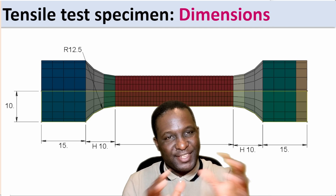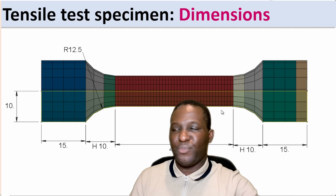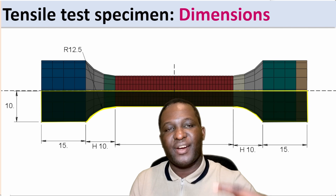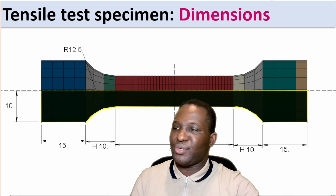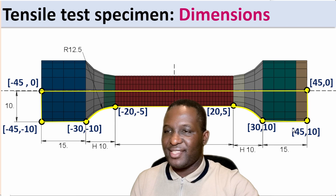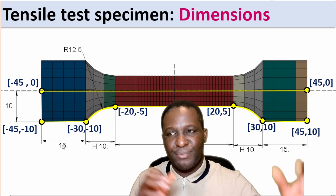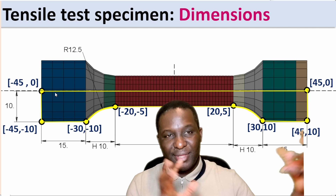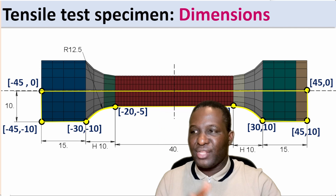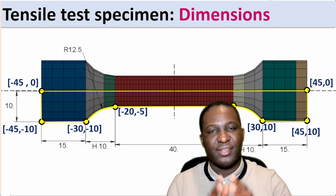Looking more closely at the specific dimensions, because we need these as we create the sample. This is what the cross section of the sample would look like. I'm going to design the cross-section profile and then revolve it around 360 degrees to generate the cylindrical specimen. The grips will have a length of 15 millimeters with a diameter of 20 millimeters, while the gauge section will have a diameter of 10 millimeters and a total length of 40 millimeters. These are the dimensions we're going to use.